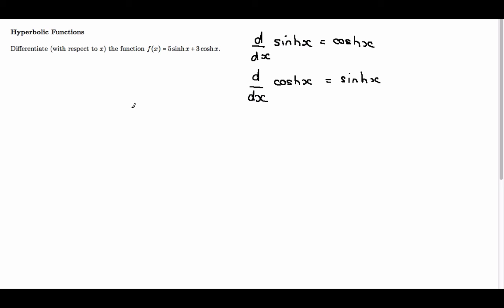We can use these two results to calculate df/dx. df/dx tells us to differentiate 5 sinh x and then differentiate 3 cosh x.